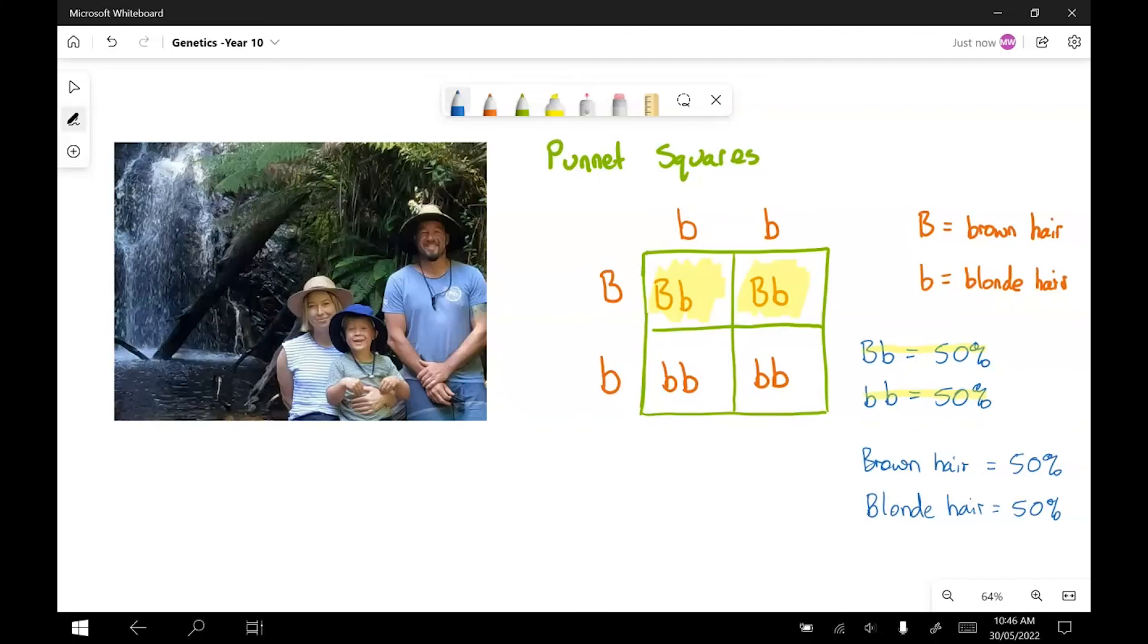Now, getting back to what would happen if I wasn't carrying a blonde gene. So let's just say, for example, that I was carrying a second capital B here. Now, if you have a look, this changes the maths entirely. Suddenly, it's a 100% chance of brown hair and a 0% chance of blonde. So I must be carrying that little blonde gene. Otherwise, Ruben wouldn't be blonde.